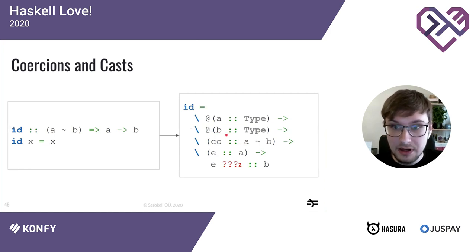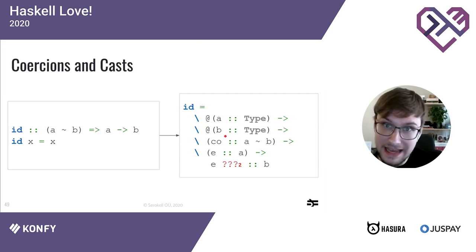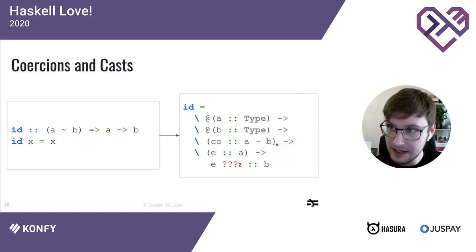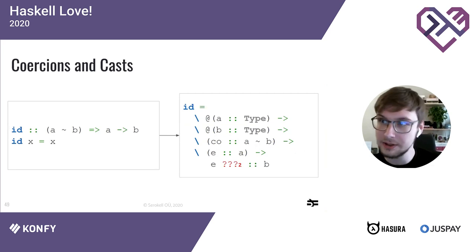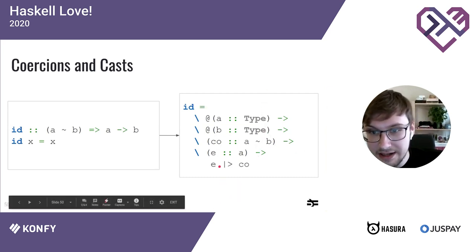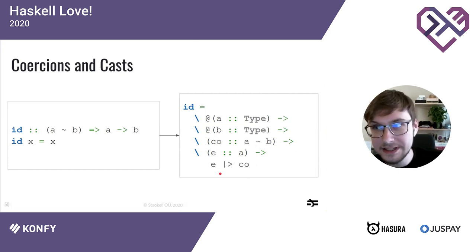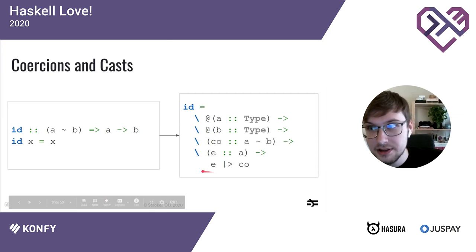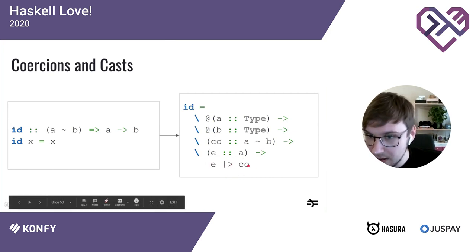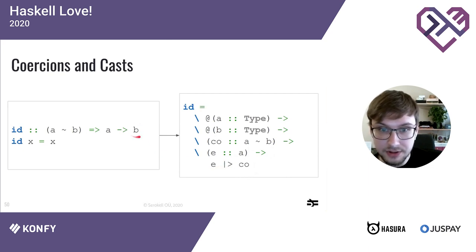In surface Haskell the type checker figures out that a equals b from the equality constraint. Core's type checker is very simple and straightforward — we need to explain things to it manually. Coercions serve as evidence of type equality: if you have a coercion co of type a ~ b, then whenever you have something of type a you can get a b out of it. The second Core construct is a 'cast': a cast uses the coercion to convince the type checker that all is well. So e, which is of type a, after being cast using the coercion establishing a ~ b, gives an expression of type b — which is what we promised to return.